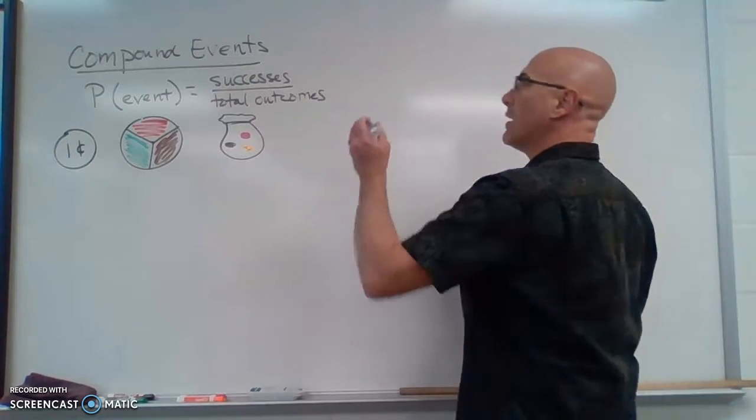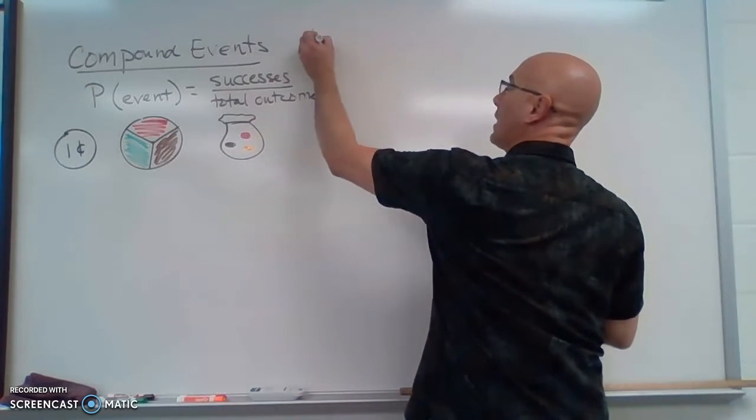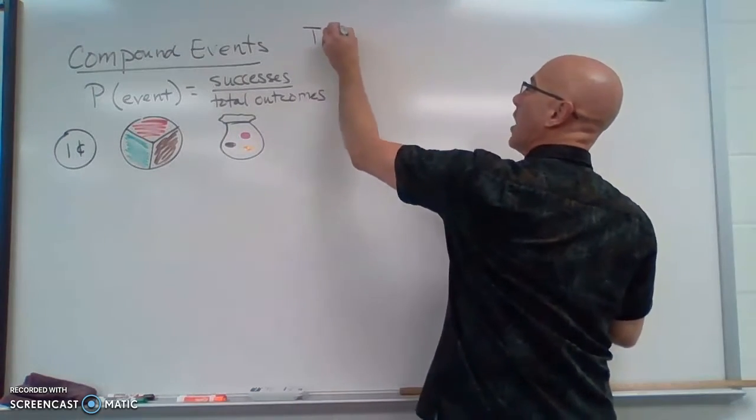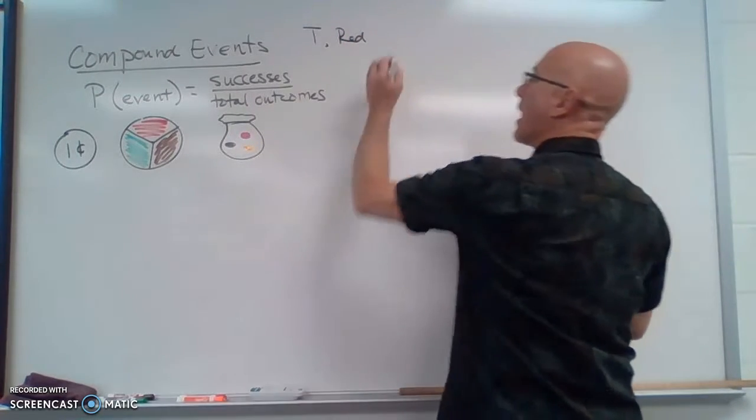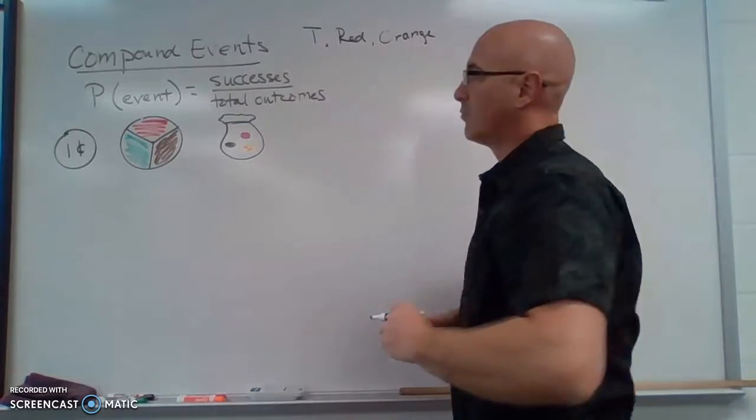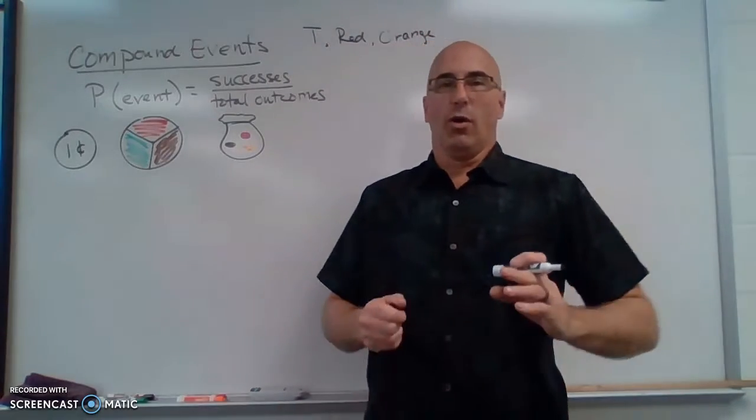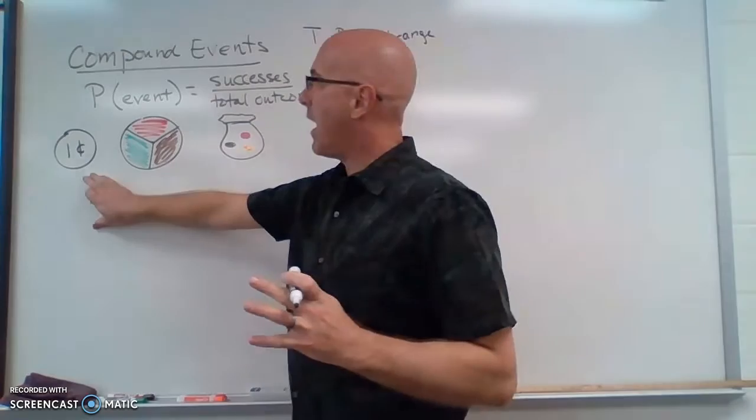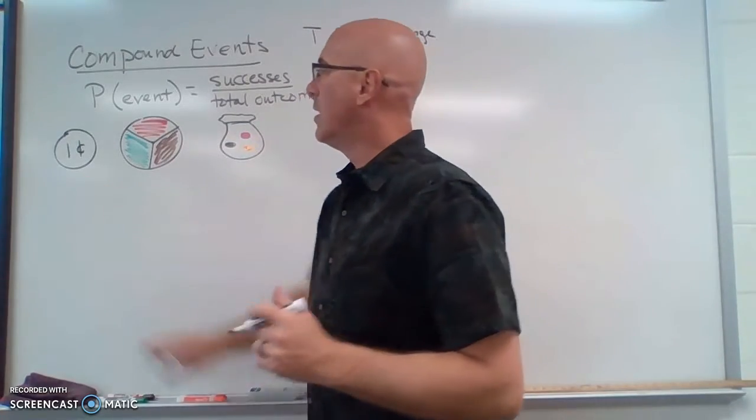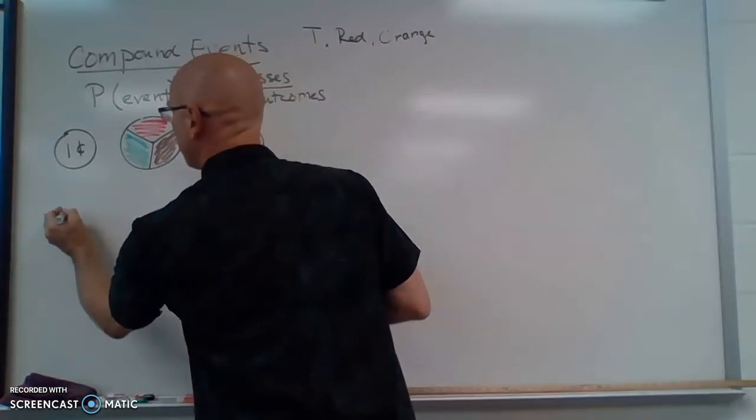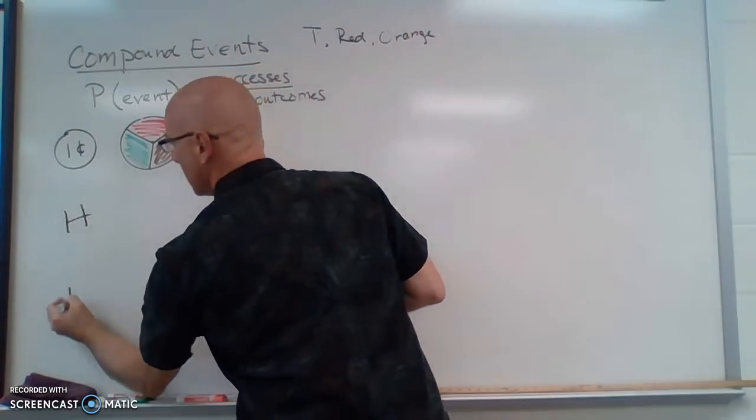I want to know, what is the possibility of me getting flipping a tail, getting a red spinner and choosing the orange marble. Okay, so we're going to start isolating all of these things. So we have, we're first going to flip that coin. What are our two outcomes, either heads or tails? So heads and tails.